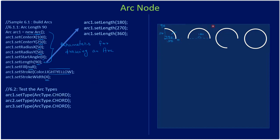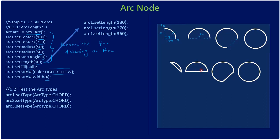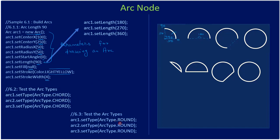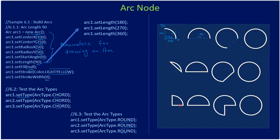This is a normal arc. If you set arc type to chord, the start and end points will be joined together. Using the setType method you can set the type of the arc. Round type means the start and end points go through the center, so the start point, end point, and center all meet — giving you a pie-slice shape.